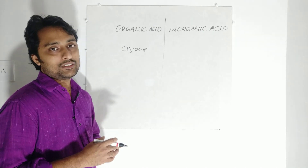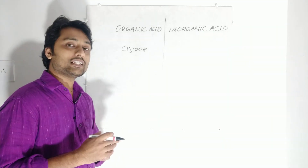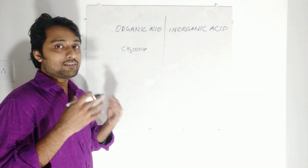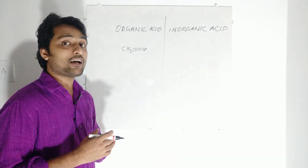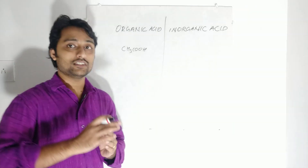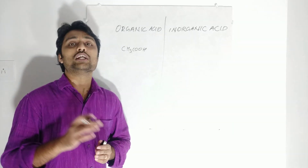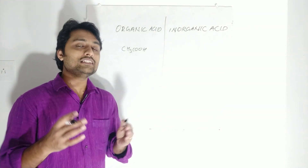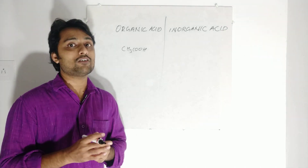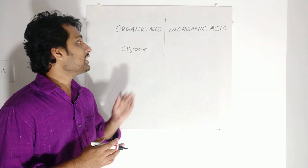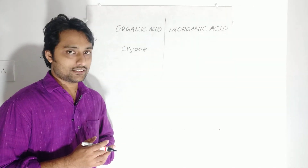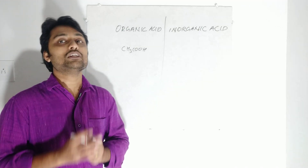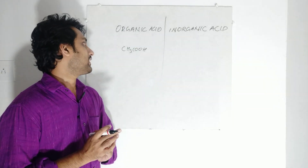These are the acids present in organisms. Not only that — we know that DNA, which is present in our cells, stands for Deoxyribonucleic acid, which is also an acid. RNA stands for Ribonucleic acid. Amino acids and uric acid are also acids present in organisms. That is why they are all known as organic acids.